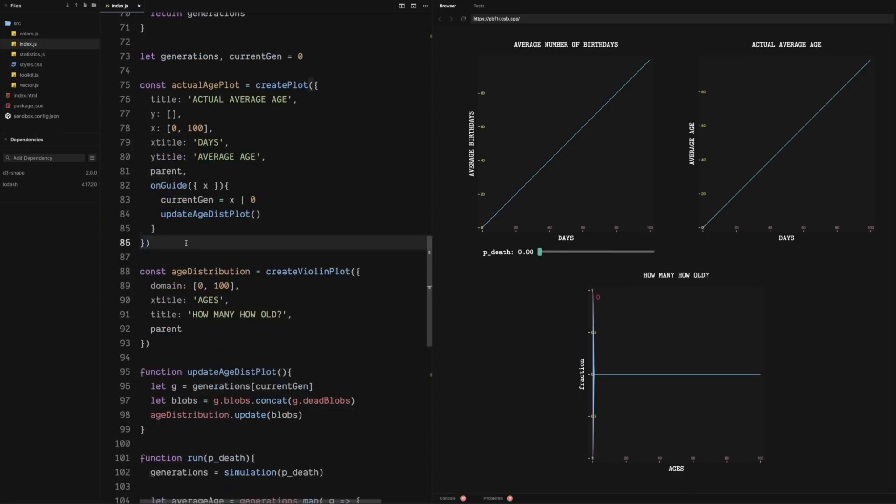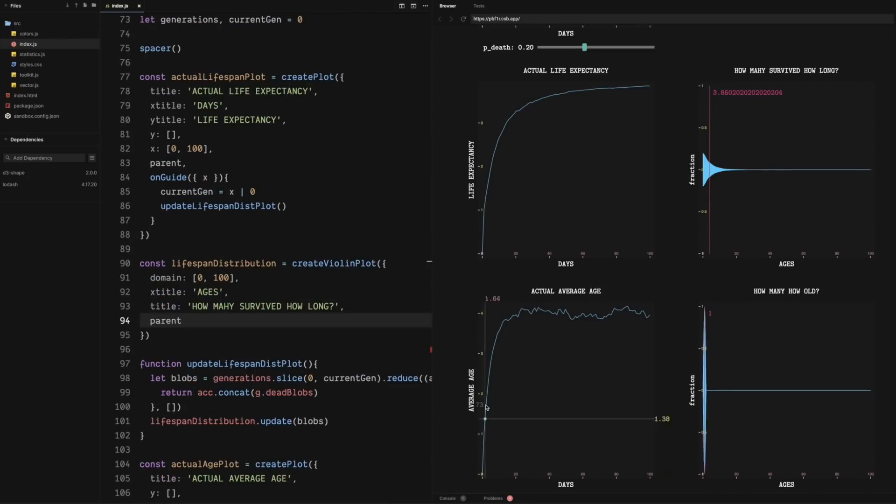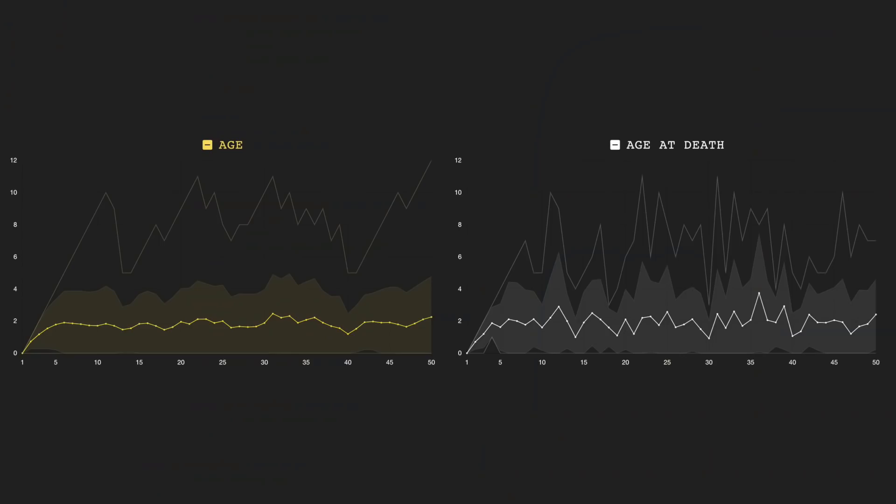We can calculate the actual life expectancy of the blobs by looking at the average age of just the dead blobs. The graphs of life expectancy and average age may look different, but they have the same shape and level out to almost the same value. And the graphs on the actual evolution simulator show the same behavior. But why would this be? This confused me for a while. We usually think of life expectancy in humans being around 70 or 80 years, while the average age of humans at any given time is much lower. That makes sense because humans are more likely to die the older they get.